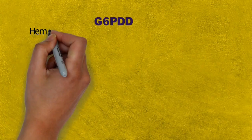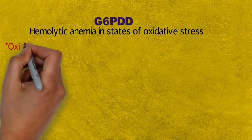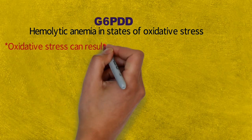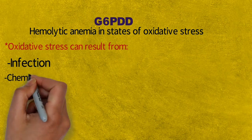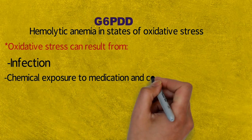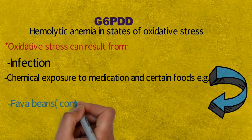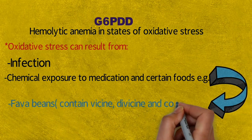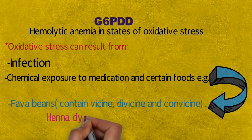G6PD deficiency causes hemolytic anemia in states of oxidative stress. Oxidative stress can result from infection, chemical exposure, certain medications, and certain foods — because they contain chemical substances toxic to individuals with this condition. For example, fava beans contain vicine, divicine, and convicine. Similarly, hummus and falafel sandwiches can be triggers.